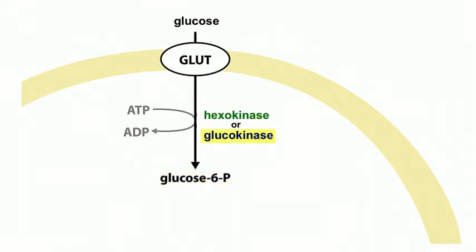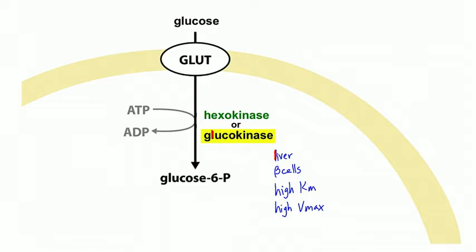Glucokinase is unique to cells that regulate glucose - just like GLUT2 receptors. Glucokinase is found in the liver and in the beta cells of the pancreas. Glucokinase has a very high Km, meaning it needs a lot of substrate to reach a decent reaction velocity - you need a lot of glucose around for glucokinase to work. But it also has a very high Vmax, meaning once it does start working it works very quickly. When there's not much glucose, you don't want hepatocytes to take up all the glucose - you want them to share it. You can use the 'L' in glucokinase and 'L' in liver to remember that glucokinase is found in liver cells.